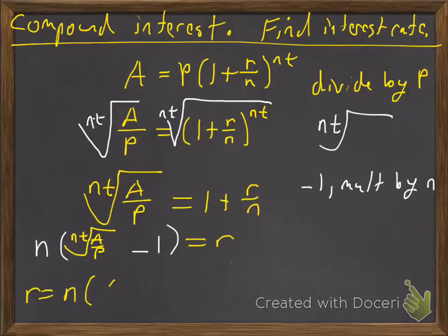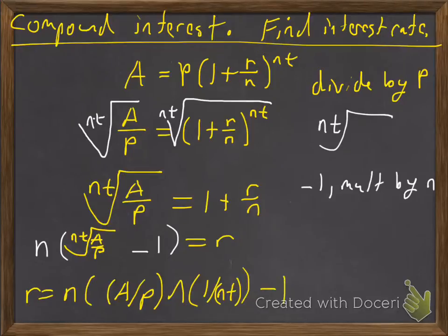So that interest rate is n times A over P raised to the 1 over nt power with parentheses like that minus 1. So that's how I would do it in a calculator that does parentheses. So let's go ahead and do an example.